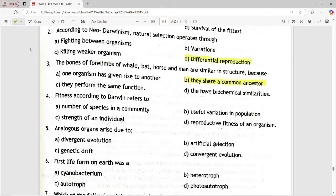Next MCQ is, fitness according to darwin refers to. Options are, number of species in a community, useful variation in population, strength of individual, reproductive fitness of organism. Answer is option D, reproductive fitness of organism.